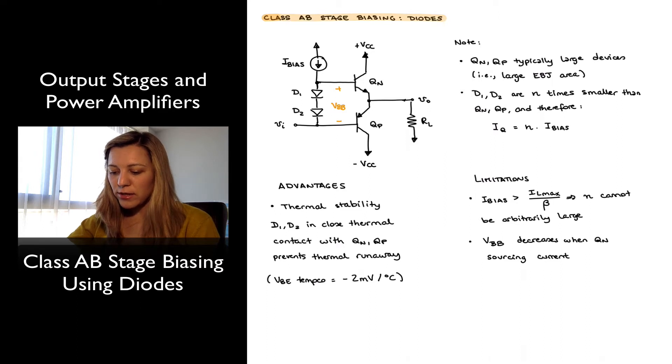Normally, Qn and Qp, which are the output transistors, are typically large geometry devices, and the reason for that is because they may need to provide large currents to the load. However, D1 and D2 don't need to provide any large currents. The maximum current that's going to flow through them is going to be in the order of the base currents of the output transistors, and so they can be made smaller than the output transistors, and they typically are, to save space and save power.